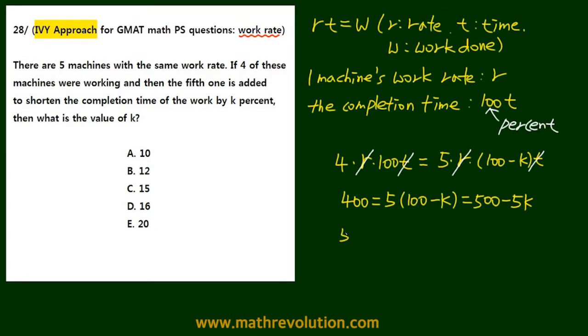So we can get the value of 5K now, which is 500 minus 400. This equals 100. So K equals 100 divided by 5, and that is 20.